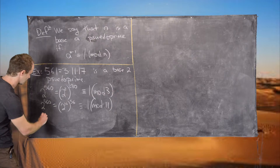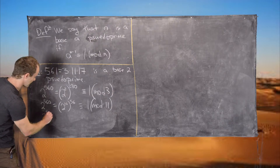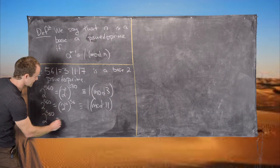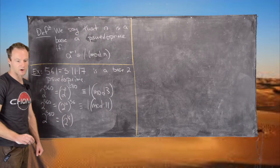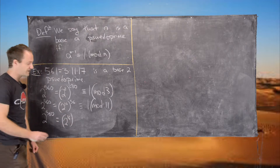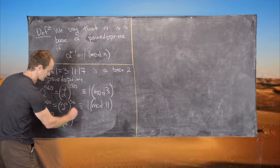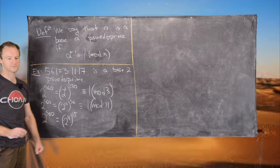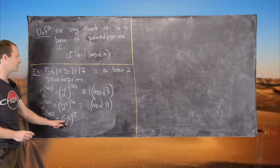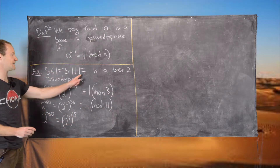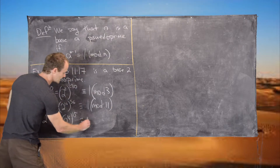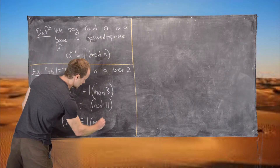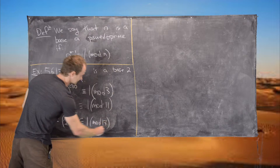Finally, 2 to the 560 equals 2 to the 16, all to the power 15. By Fermat's Little Theorem, 2 to the 16 is congruent to 1 mod 17, so this whole thing is 1 mod 17.